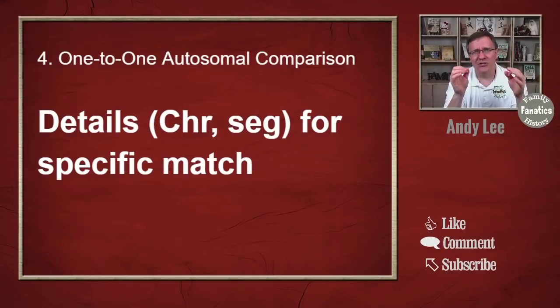That should help get you started. If you want to watch each one of the videos for these individual tools, they are in the description below. Start with 'Are Your Parents Related,' then go to the match list — the one-to-many. With that, start using the 'match both kits' to start grouping things, and then look at each individual one with the one-to-one. If you have any questions, put them in the comments below. If you'd like an overview of GEDmatch, you can watch this video up here; if you want to learn something else, you can watch this video down below.